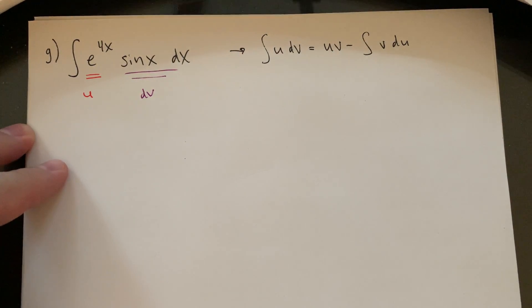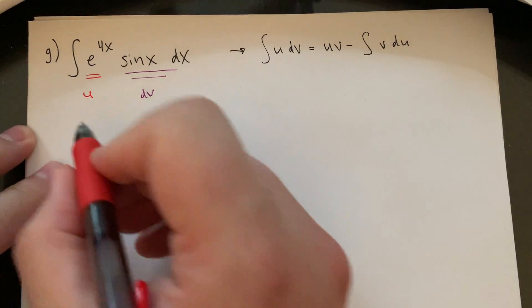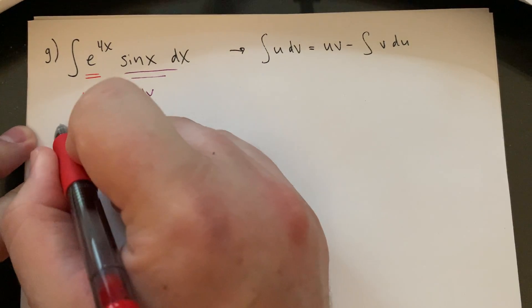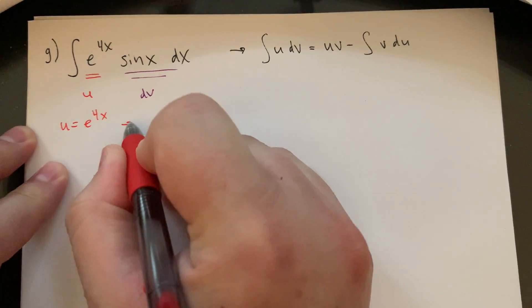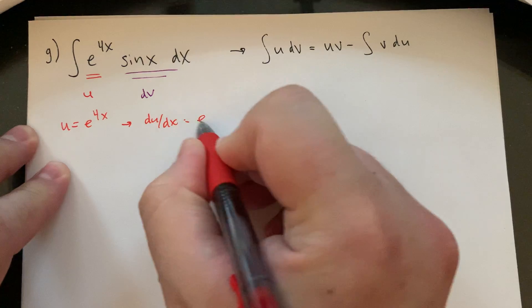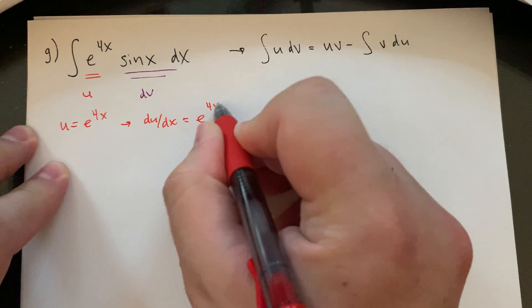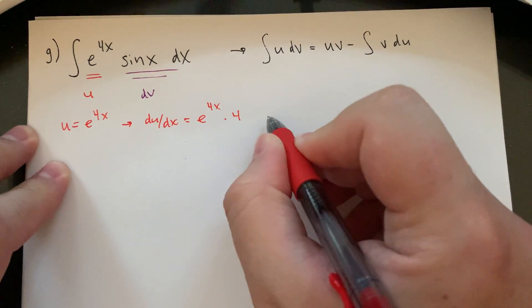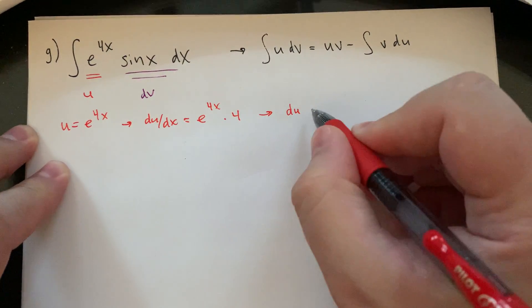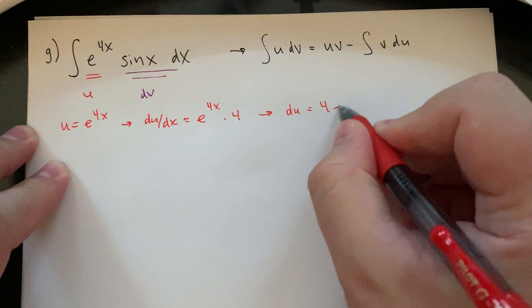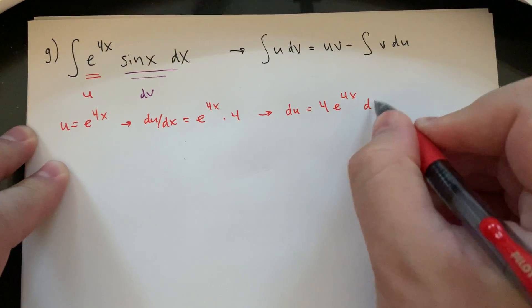So let's say that e to the 4x is my u and then my sine x dx is dv. So if u is e to the 4x, then my derivative du/dx would be e to the 4x times the derivative, times 4. So du is going to be 4 e to the 4x dx.